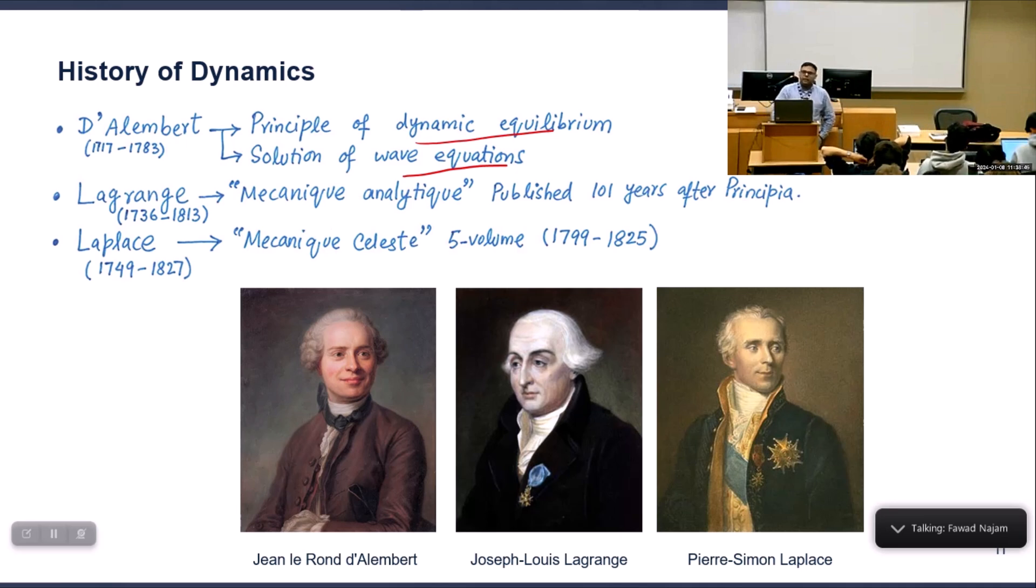We have another two big names: Lagrange and Laplace. You know already their contributions in mathematics and calculus, but they have contributions in mechanics and geometry of mechanics also. For example, Lagrange published Mechanique Analytique after 101 years of Principia, explaining the mathematical theory for different types of motions. For celestial objects, Laplace also authored a five-volume Mecanique Celeste, working out the theory for different motions of planets and other celestial objects.